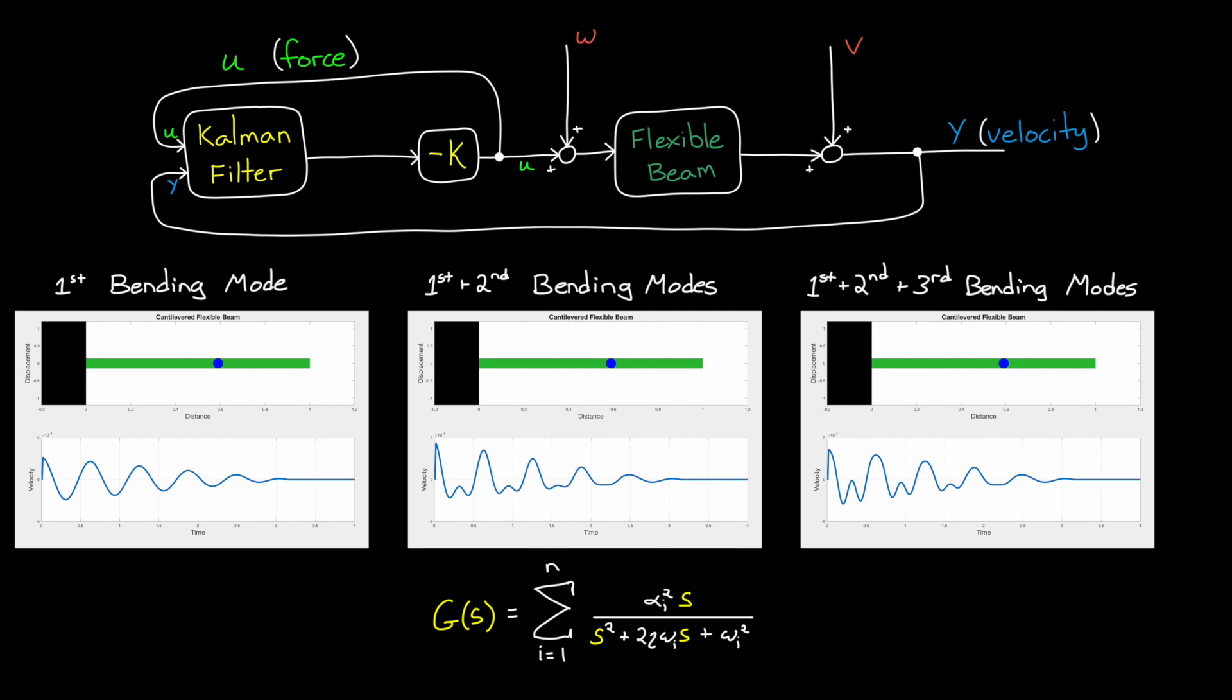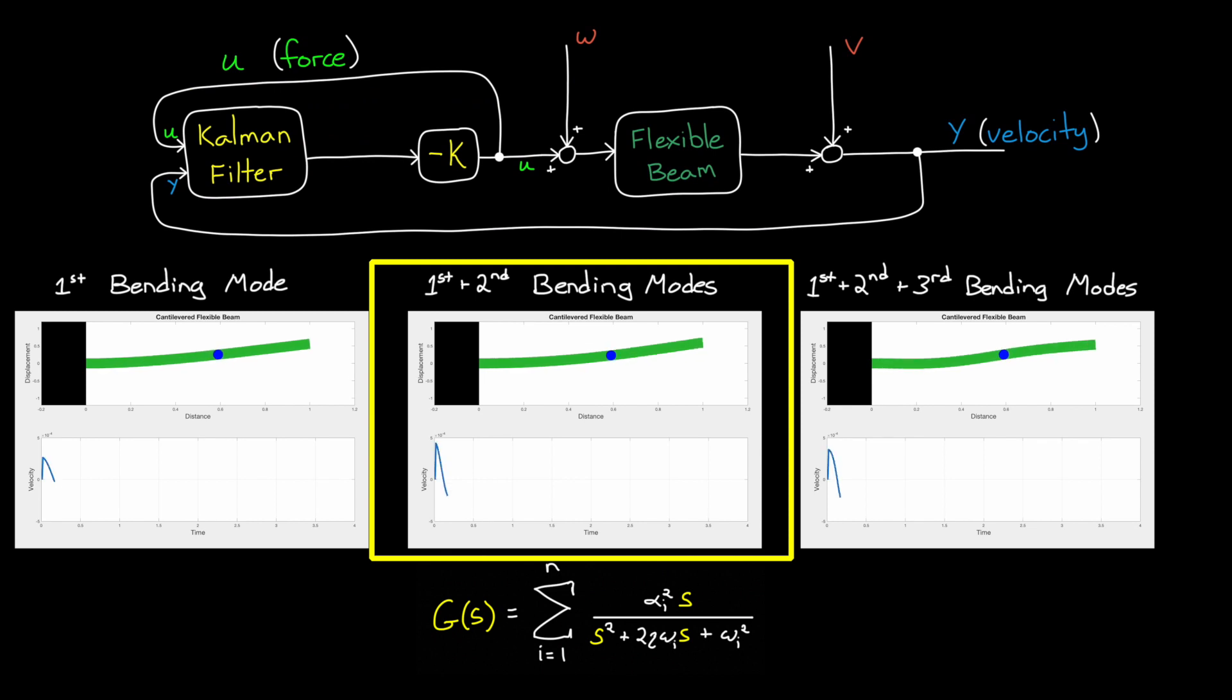The question is, how many modes do we actually need to model? The more we model, the more accurate it will be and the higher the chances are that our LQG controller will work on the real beam. However, the more states we add to the model, the more states the controller has, since it's a 1 to 1 ratio, so we're going to end up with a larger controller as well. To investigate this question, let's start with just the first two modes, which has a total of four states.